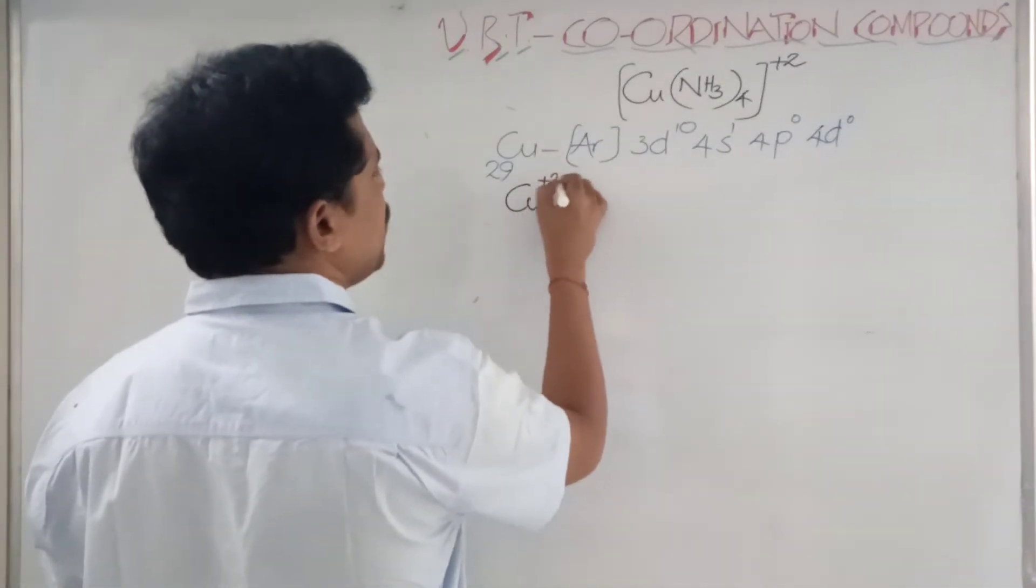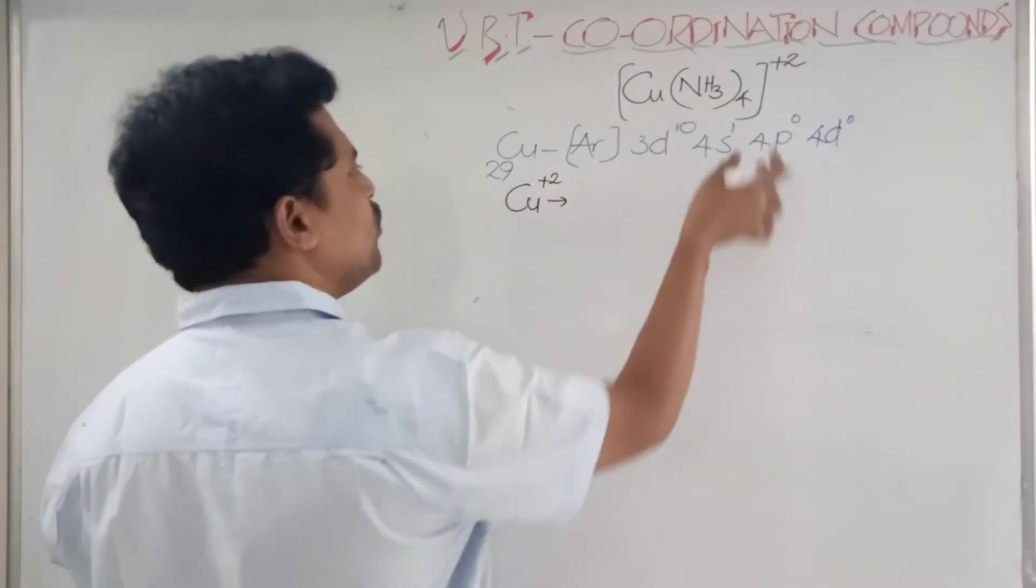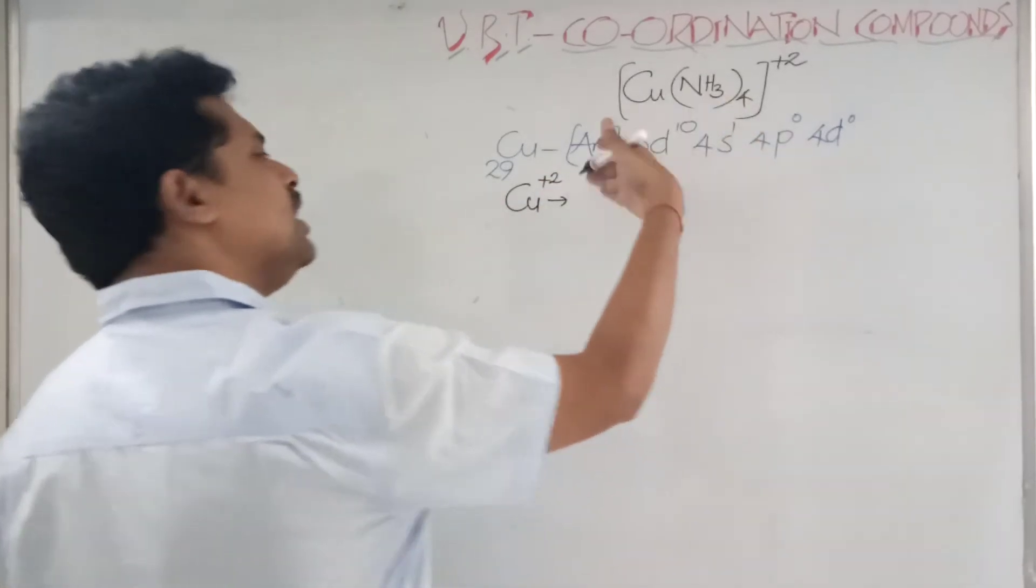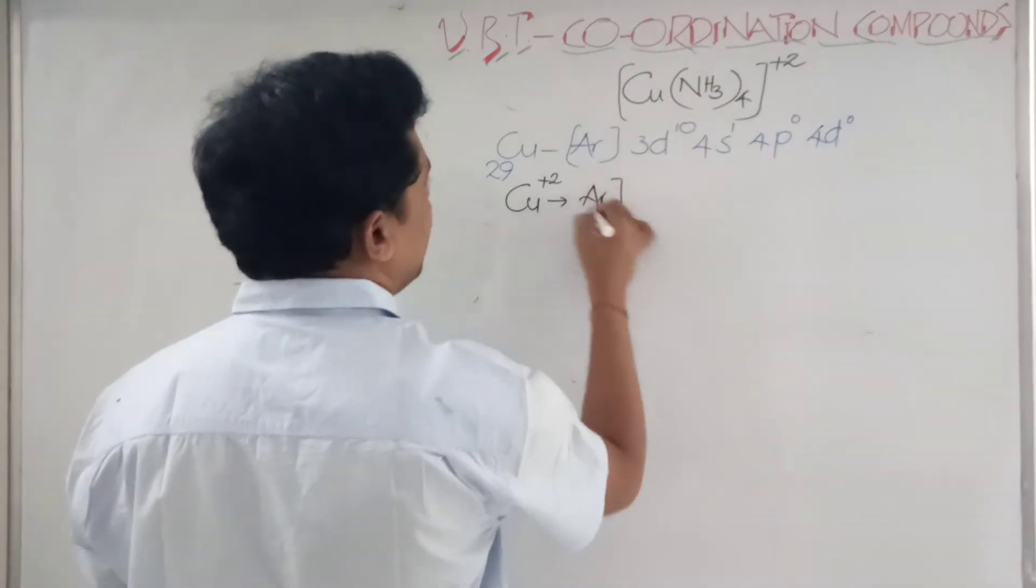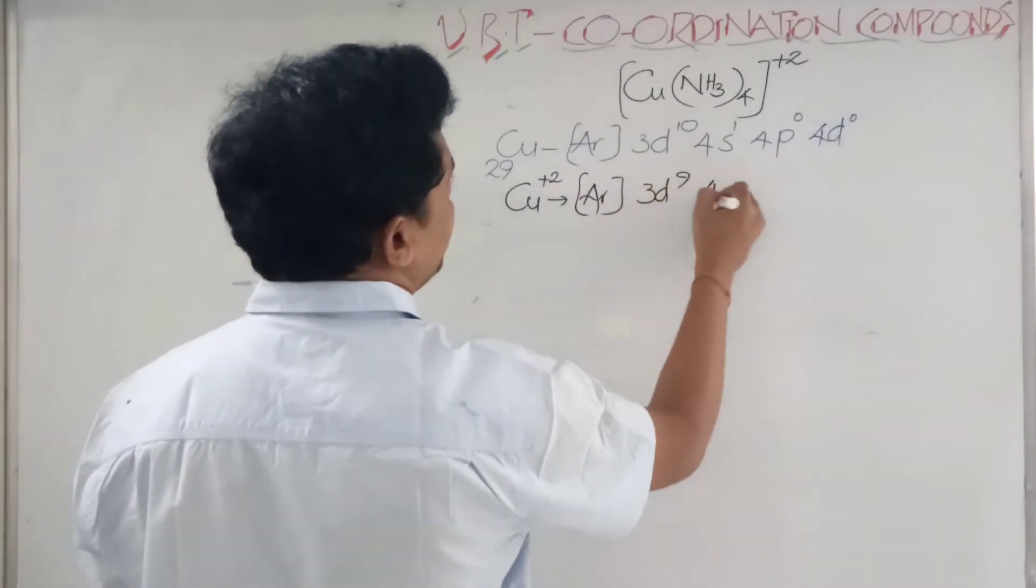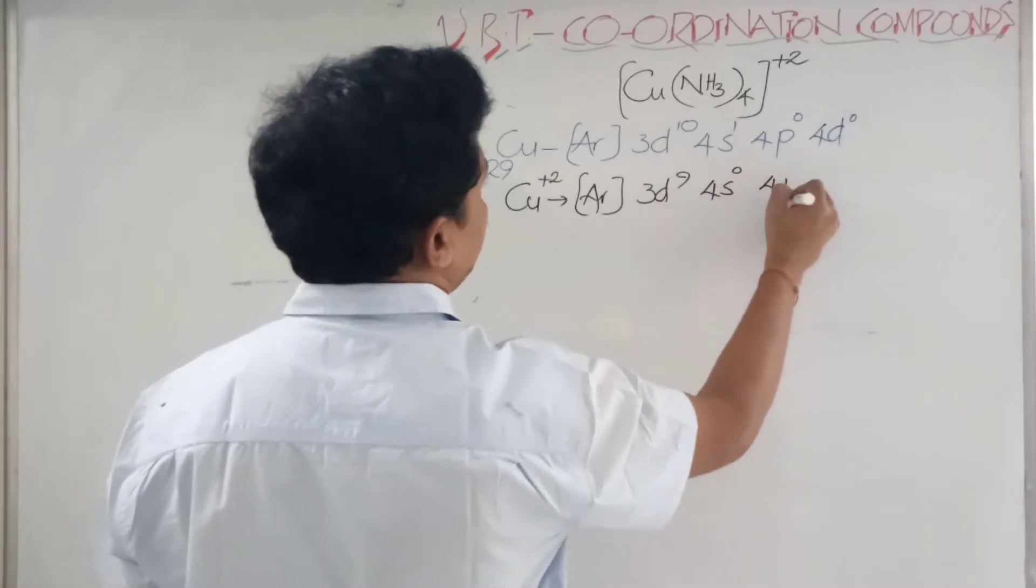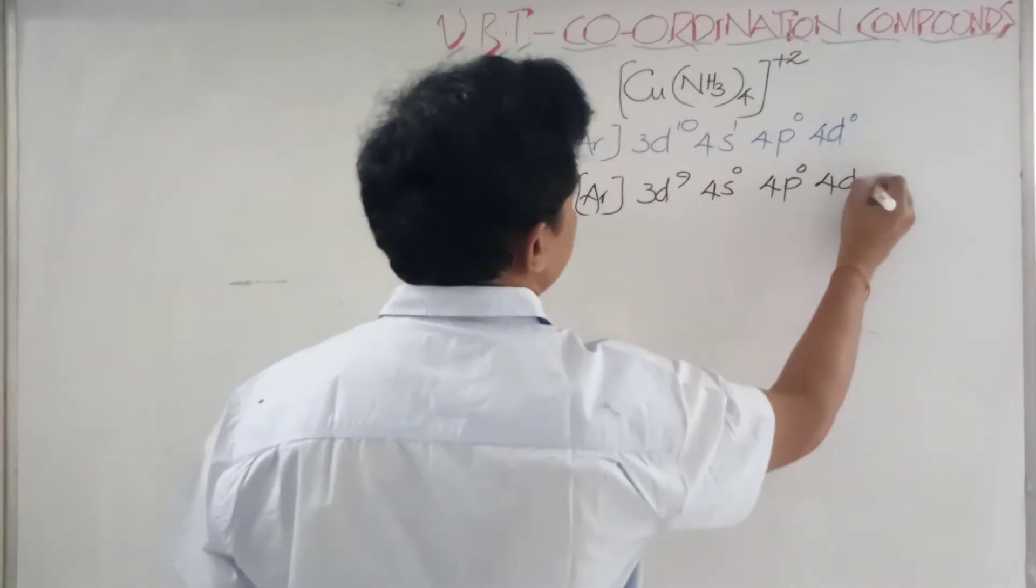As we were discussing, one electron will go from the s orbital, the remaining electron will go from the d orbitals. So it will be [Ar] 3d⁹ 4s⁰ 4p⁰ 4d⁰.